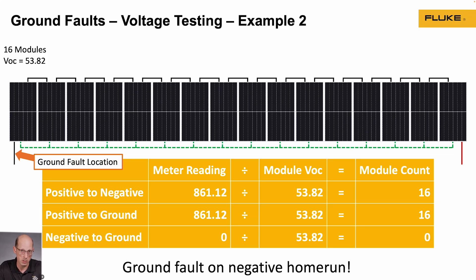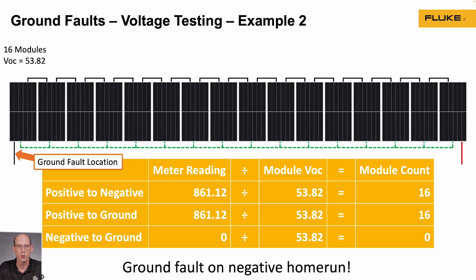Negative to ground measured zero volts, which is the reading I expected. This indicates there are zero modules between the negative end of the string and the ground fault, and 16 modules between the positive end and the ground fault. That means the ground fault is in the negative home run wire from the end of the string going back to either the combiner box or the inverter. This is a frequent fault location that's easy to miss — when you're used to seeing open circuit voltage of the string as zero, it can be easy to overlook that the positive to ground reading was 861 volts, not zero. Keep this in mind so you don't miss ground faults on the positive or negative home run wires.